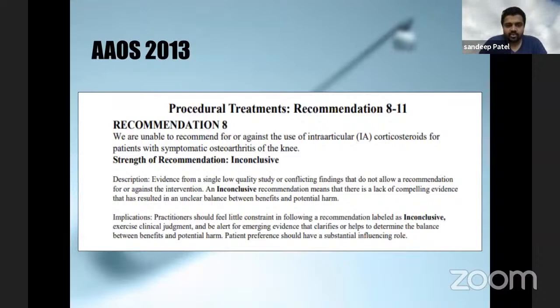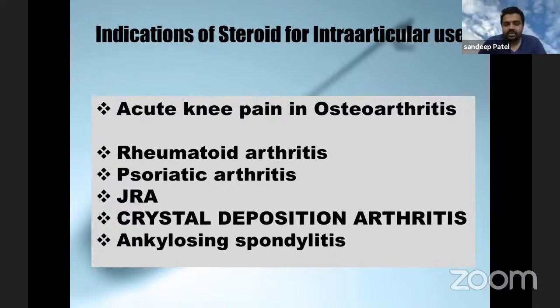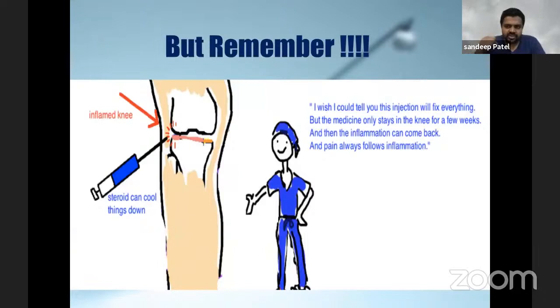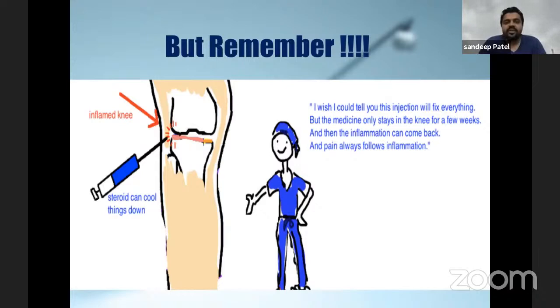So for knee arthritis, the indications for steroid use are acute knee pain - that is the acute flares in osteoarthritis - and definitely for inflammatory arthritis, wherein the mechanism of action is completely different as we have to address the inflammation. When you give an injection to the patient, you have to tell them: this is for the acute flare, and the core treatment should begin. Once it's gone, the inflammation and pain will always come back. So for the acute flares, it should be used.